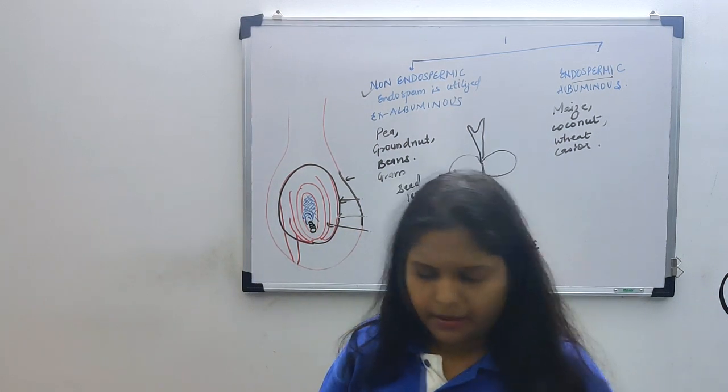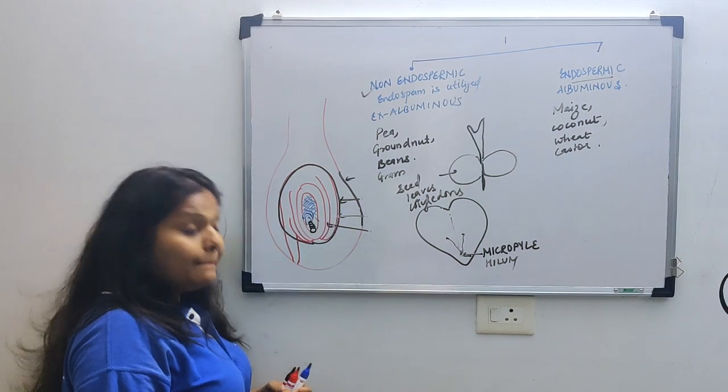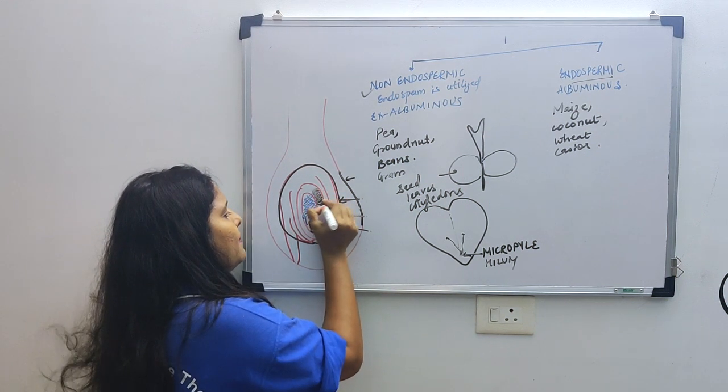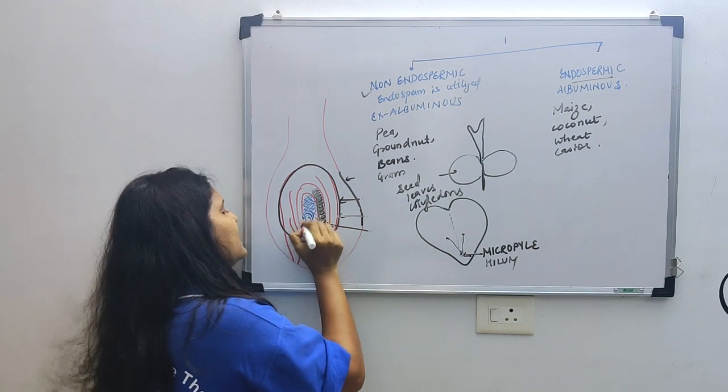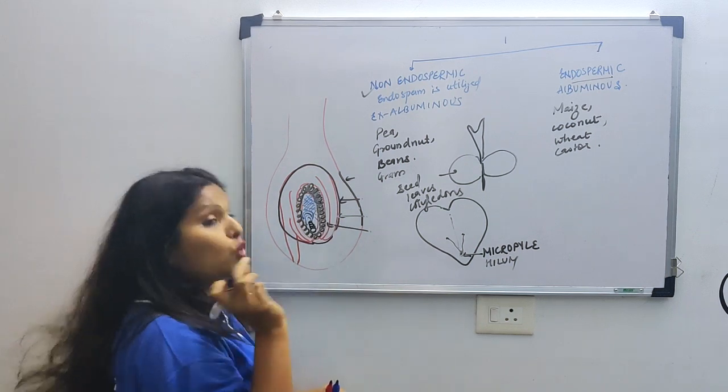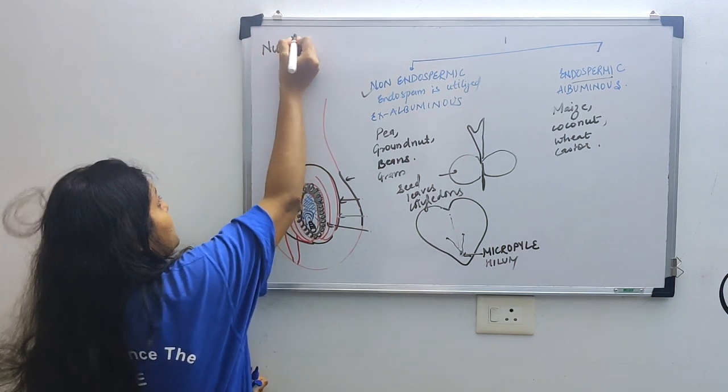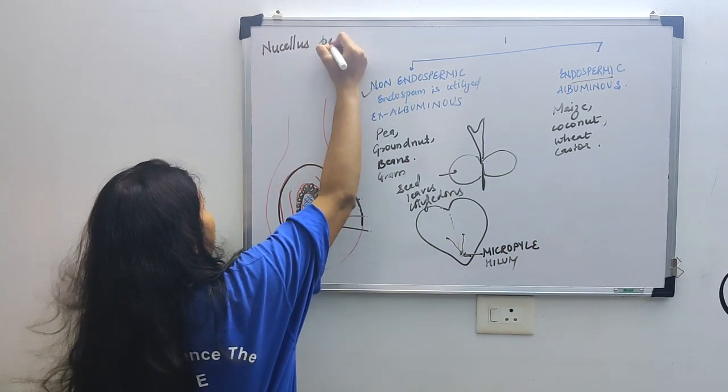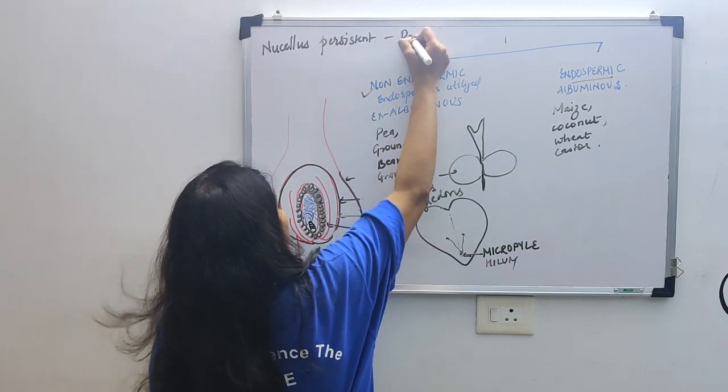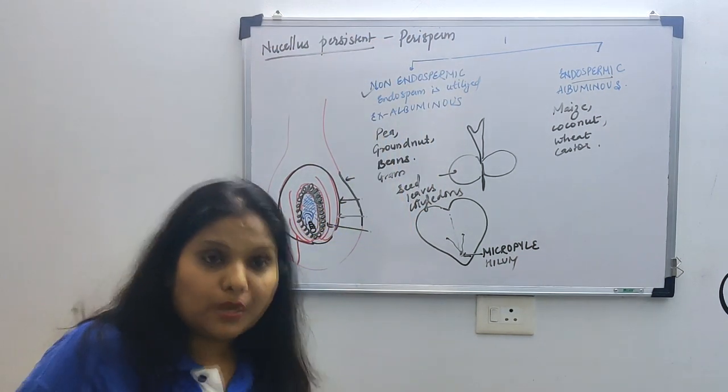Now there is one more thing that we need to remember. Ideally, we have only talked about endosperm so far. But in some seeds, outside the embryo sac, this is our nucellus, right? Nucellus generally gets utilized during development. But in some seeds, in some seeds, the nucellus remains persistent after seed development. So nucellus remains persistent after seed development. Such nucellus we will call perisperm.